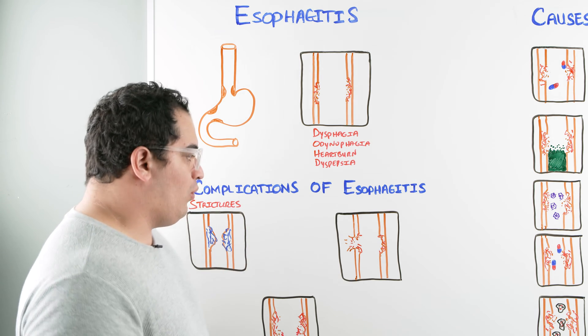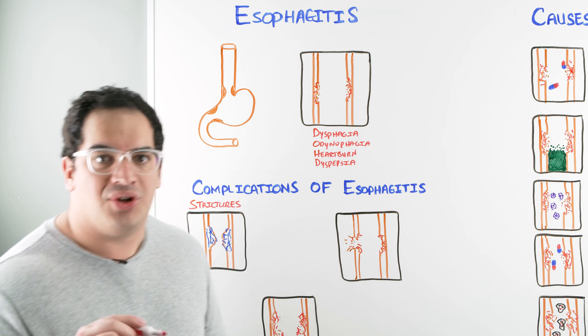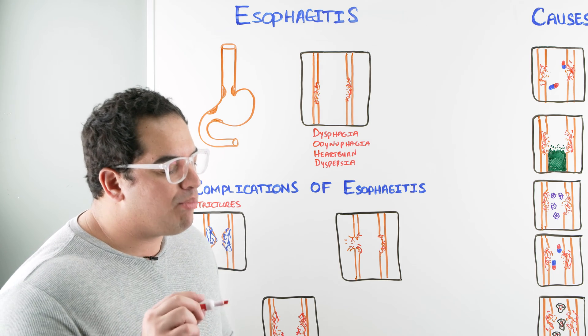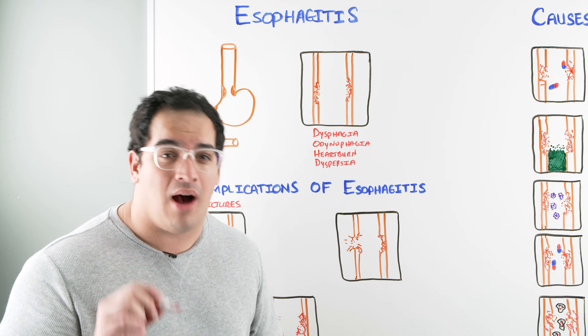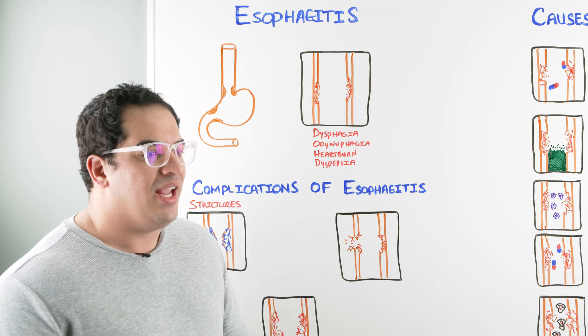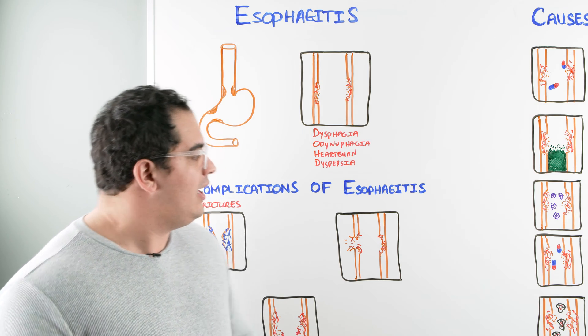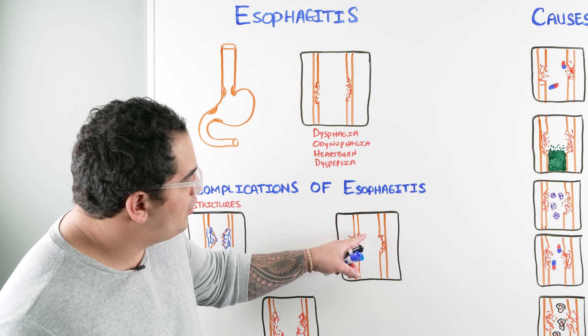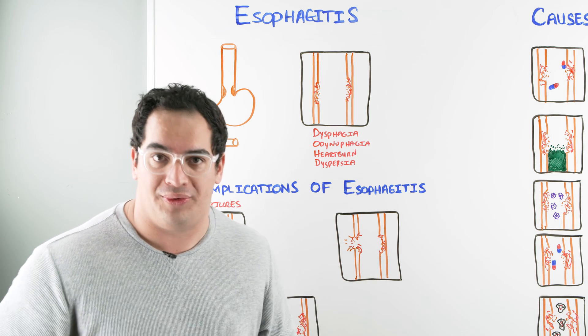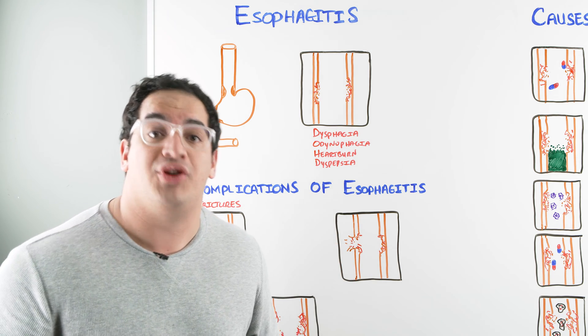The next thing I also want you guys to be wary of in patients who have esophagitis - this is probably the most scary complication, especially with that particular type we'll talk about later called caustic-induced esophagitis - is the agents are so strong they can rip a hole through the esophagus. This is called esophageal perforation.